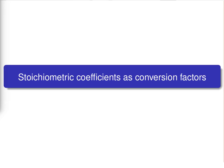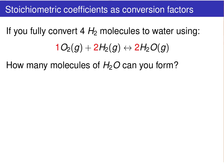In this section, we're going to examine how we can use the stoichiometric coefficients themselves as conversion factors. To do this, let's consider the following problem. Let's suppose you fully convert four H2 molecules to water using our balanced chemical reaction equation. How many molecules of water can we form from these four H2 molecules?